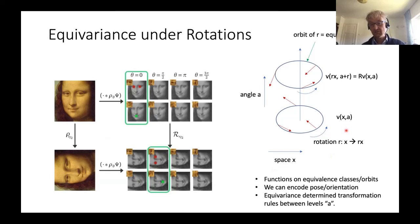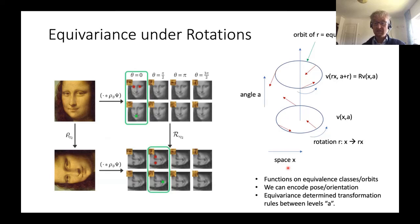More abstractly, I have a particular point X which could be an image, and I can rotate the image — that's the orbit. At every point in the orbit, I have a particular feature vector. If I rotate around, this vector moves to a new position and itself also rotates. This means that the feature vector at the rotated position equals a rotation R of the feature vector at the original position X. That's what we call equivariance. So, how does this look for a mesh? This is what we call group convolutions, and now we need to apply this to our meshes.